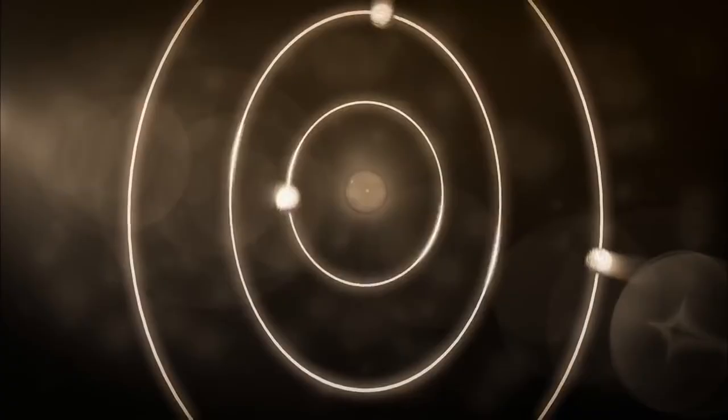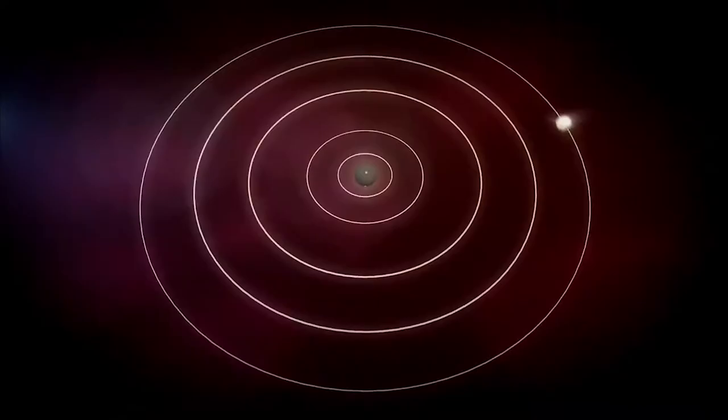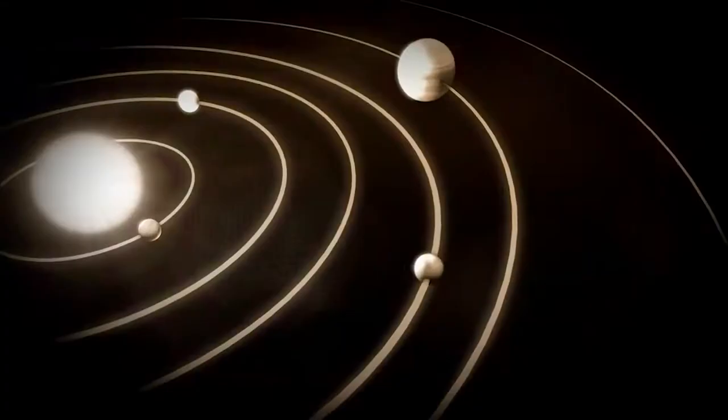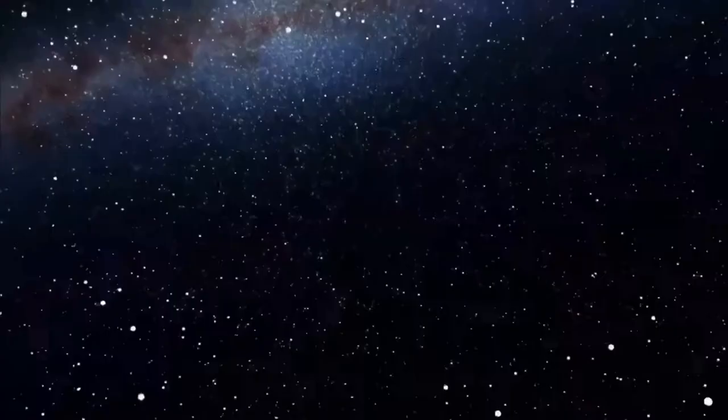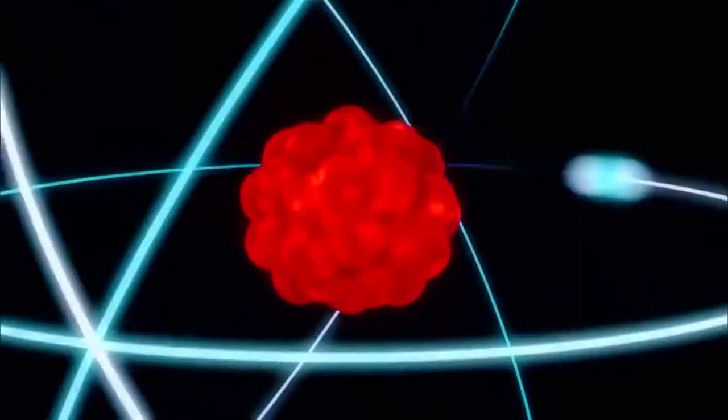In the early 20th century, scientists discovered that the atom has a nucleus and an electron. Max Planck suggested his famous formula, later called Planck's constant. It defines the boundary between the macroscopic world, where the laws of Newtonian mechanics apply, and the microcosm, where the laws of quantum mechanics are applied.